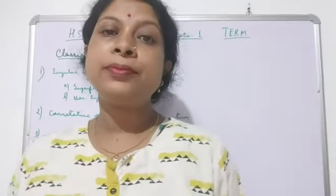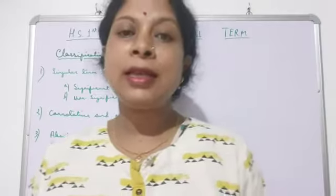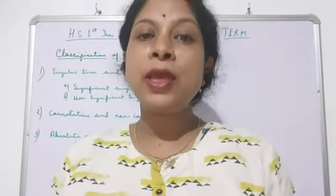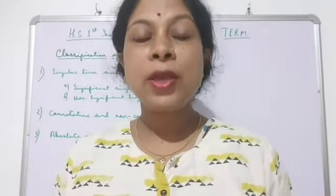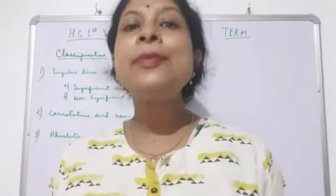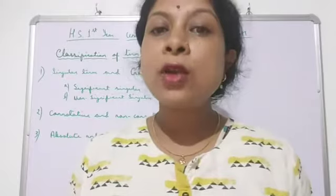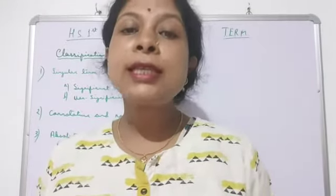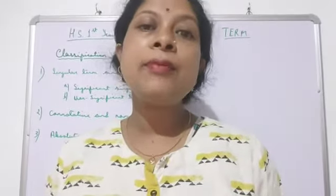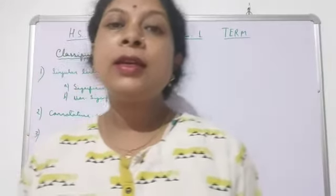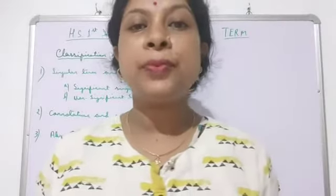A singular term is a term which denotes only one single object. This single object may be a place, a thing, or a person — any single object. When a term denotes that single object, it is called a singular term. This singular term can be a place, a person, a road, or an object.